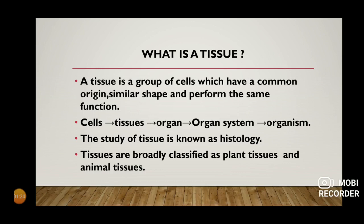These properties define what we call a tissue. In multicellular organisms, cells are held together by a cementing substance called the matrix. Cells unite to form tissues, tissues unite to form organs, organs form organ systems, and many organ systems together form an organism. This is the sequence in our body.